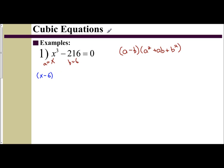In the second parenthesis, we have A squared. Since A is x, I have x squared. We have plus A times B, so x times 6 is 6x, plus B squared, so 6 squared is 36. And that equals 0. This is my factored form.